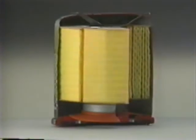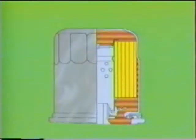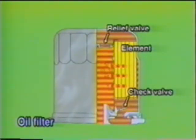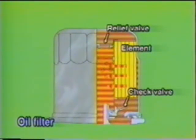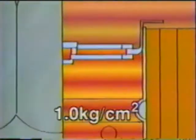The oil filter removes fine impurities such as powder and carbon from the engine oil. The filter comprises a check valve, filter element, and relief valve. Oil from the oil pump pushes open the check valve, entering the outer circumference of the filter element. As the oil passes through the element to the filter's center, impurities are filtered from the oil, which is then sent to each part of the engine. If the filter element is clogged, the oil pressure at the filter outer circumference becomes higher than that at the center. When the pressure difference becomes about 1 kilogram per square centimeter, the relief valve opens to create a bypass, allowing the oil to flow directly to the engine without passing through the filter element, thereby preventing insufficient lubrication.